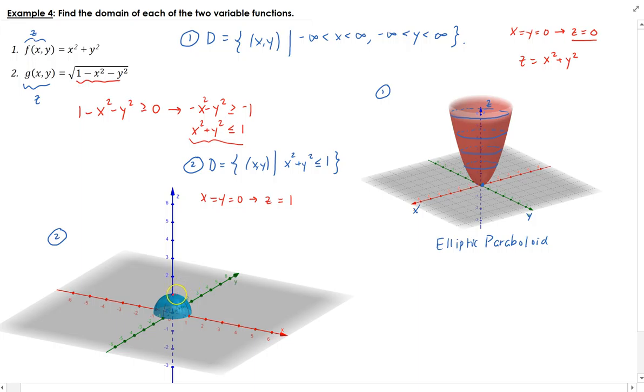So as you start to work your way down along the z axis, then you start to get these co-centered circles. And that's where this restriction is coming into play. So on the bottom, when z is zero, you're going to actually get the equation x squared plus y squared equals to one.